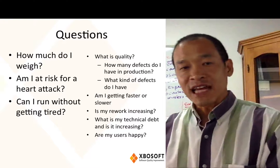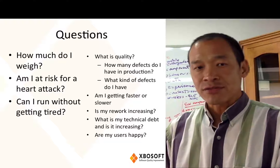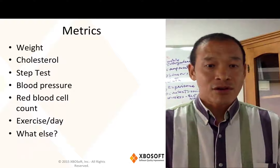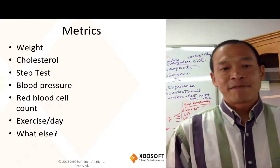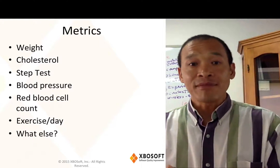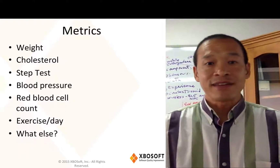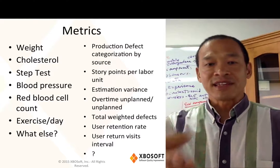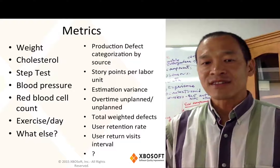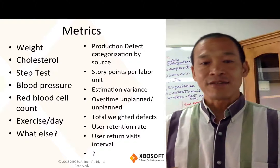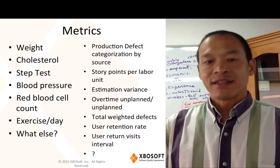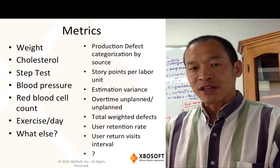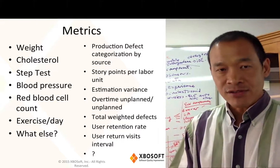Now let's talk about the metrics. We want metrics that help us to answer those questions. From a personal standpoint, maybe I get metrics on my weight, my cholesterol, if I took a step test, if I measure my blood pressure — if I take those metrics and measure them over time, I can tell if I'm becoming more or less healthy. From an Agile point of view, we can think of production defects categorized by source. I can also think of my work estimates on my stories, whether or not that's accurate, the weighted value of some of my defects, or user retention rate to tell me if my users are satisfied. All of these metrics go towards answering specific questions that are tied to my goals.